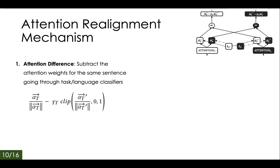In the realignment mechanism, the first step is to subtract the attention weights. Consider just the task classifier: when you subtract the attention weight generated by the language classifier from the attention weight generated by the task classifier, the model slowly gives more priority to words truly related to the task. We apply the same subtraction process on the language classifier as well. Eventually, both classifiers start focusing on different words for their predictions. The normalization step ensures the weight subtraction makes sense, and the clipping step ensures only positive values are used for subtraction.